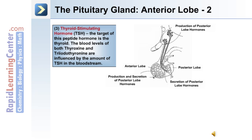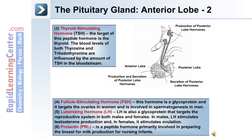TSH targets the thyroid gland, and blood levels of both thyroxine and triiodothyronine are influenced by the amount of TSH in the bloodstream. The fourth hormone is follicle stimulating hormone, or FSH, a glycoprotein that targets the ovaries in women and is involved in spermatogenesis in men. The fifth is luteinizing hormone, or LH, also a glycoprotein targeting the reproductive system. In males, LH stimulates testosterone production; in females, it stimulates ovulation. The sixth hormone is prolactin, a peptide hormone principally involved in preparing the breast for milk production.